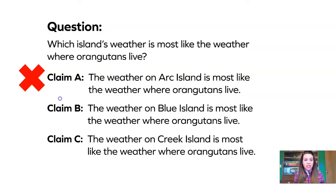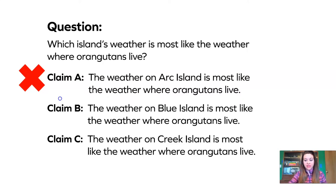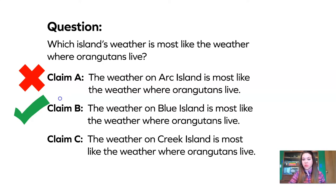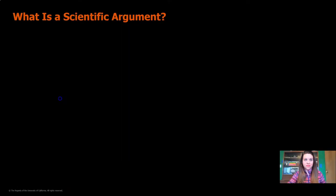Going back to our claims, we already know it can't be Claim A. So let's look at Claim B and Claim C. Claim B says the weather on Blue Island is most like the weather where orangutans live. Do you think that sounds right? Yeah, me too. We have data and evidence to show that Claim B is the one we should support. What about Claim C — the weather on Creek Island is most like the weather where orangutans live? No, we know that Creek Island isn't as hot or as rainy as Blue Island.